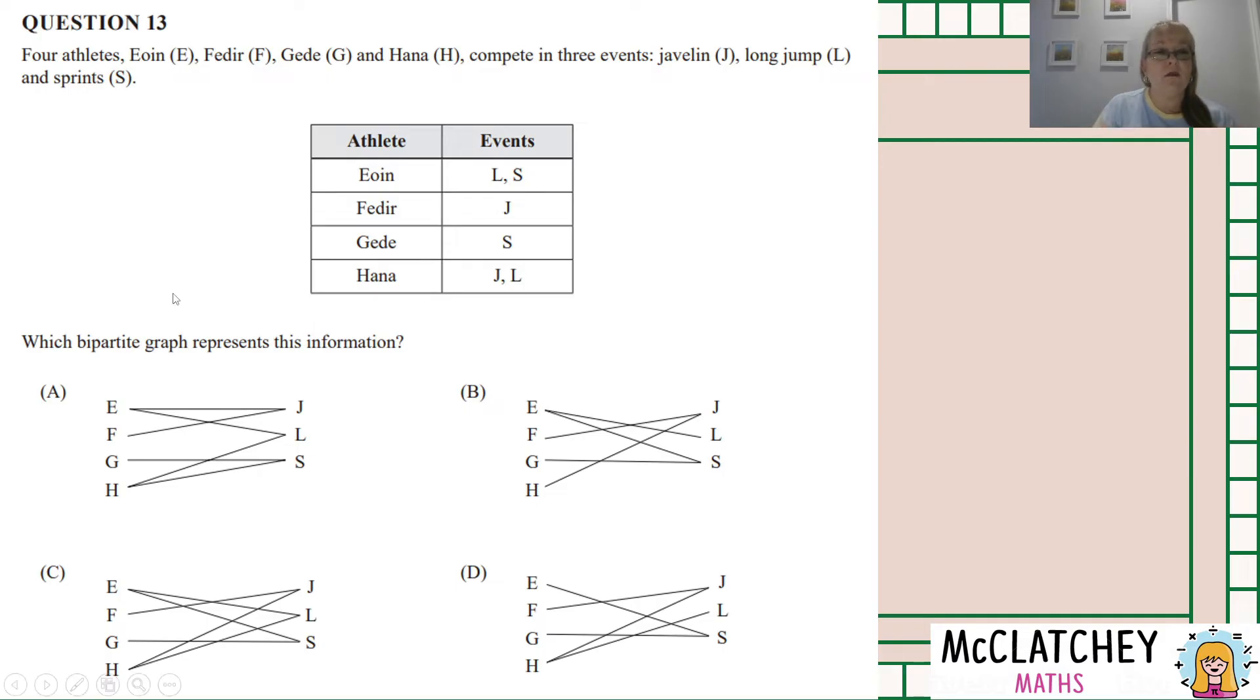So if we start over here with Yuen, Yuen should be going to long jump and to sprints. They go to javelin instead. So that's not correct. We don't even need to look at the rest of it. We'll just rule out that first one. Let's jump over to B. Yuen to L and S. Well yes they are going to L and S. Good. Fadiya should be just to javelin. Yes this is looking like a possibility. Ghida should be going to just S, sprints. Correct. Hannah, J and L. Oops only J. So that means we have to rule out B.